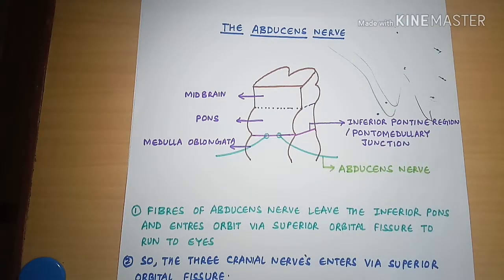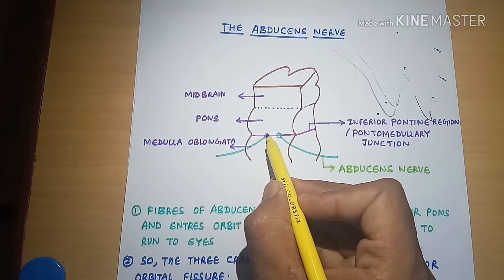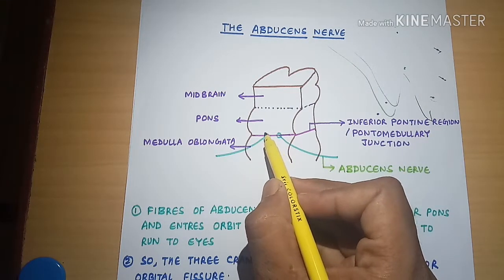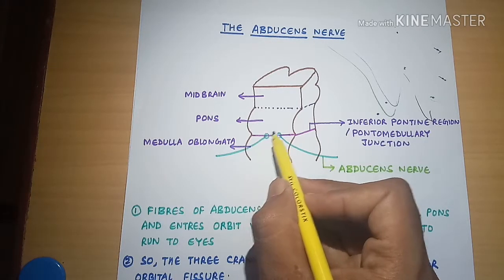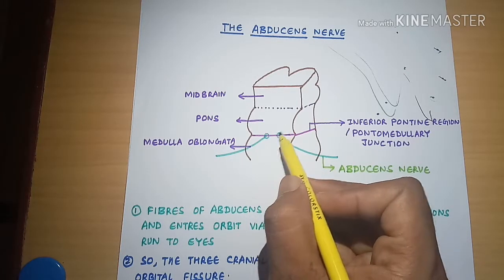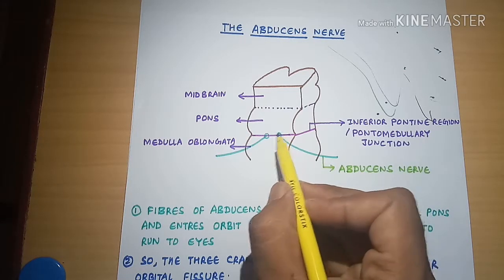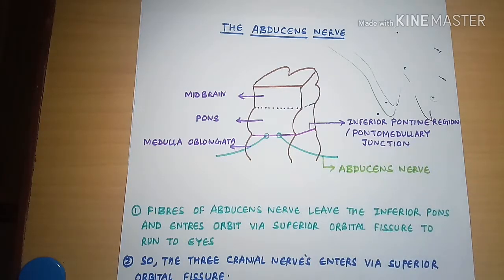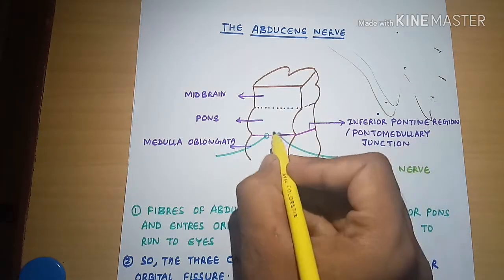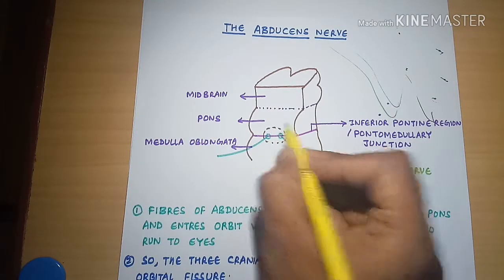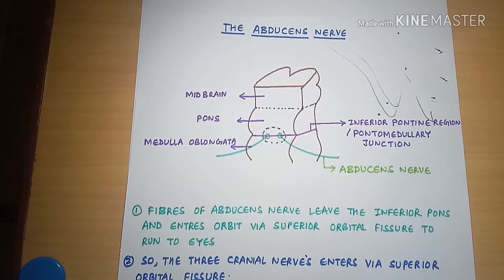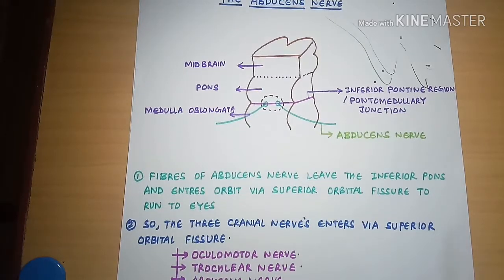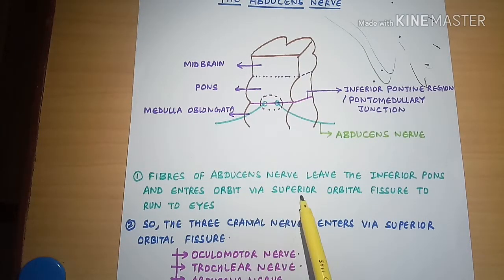This region of the brainstem is called the inferior pontine region, or the pontomedullary junction. From the anterior aspect of the pontomedullary junction — the inferior pontine region — the abducens nerve will arise. The fibers of the abducens nerve leave the inferior pons and enter the orbit via the superior orbital fissure to run to the eye.